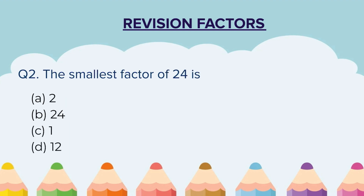Question 2: The smallest factor of 24 is — a) 2, b) 24, c) 1, d) 12. You have to select the correct answer out of these 4 options.